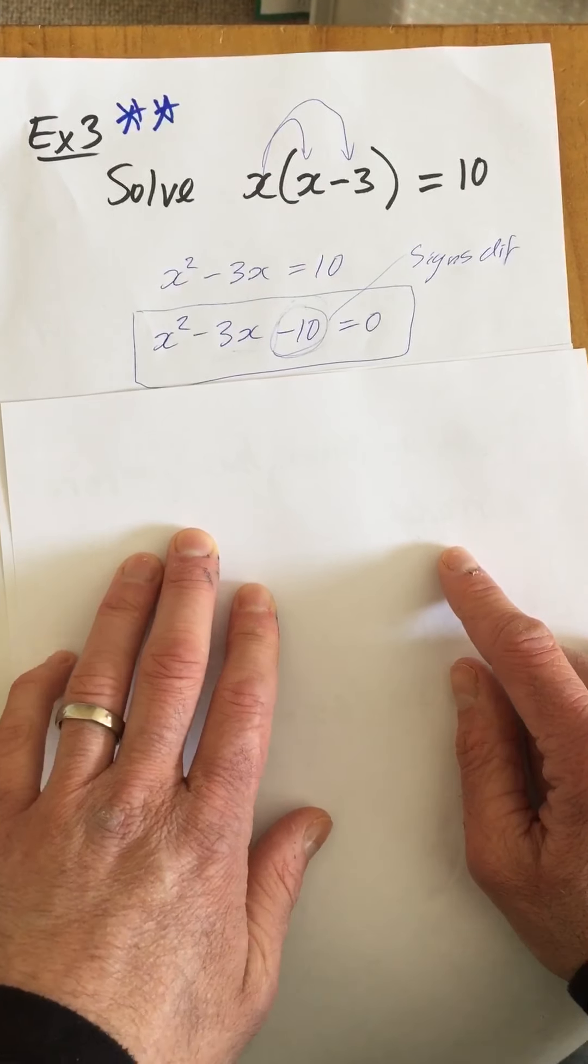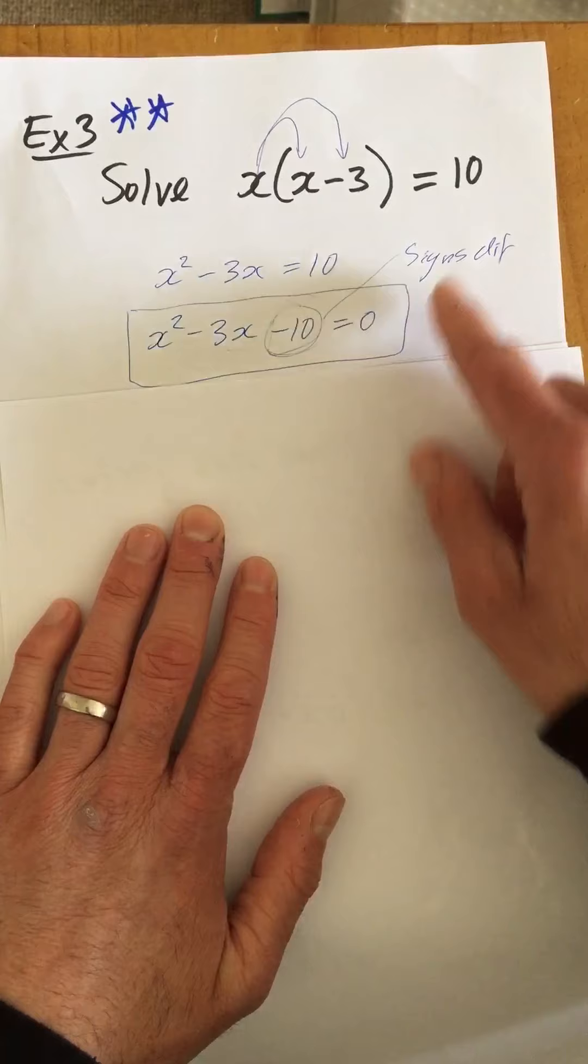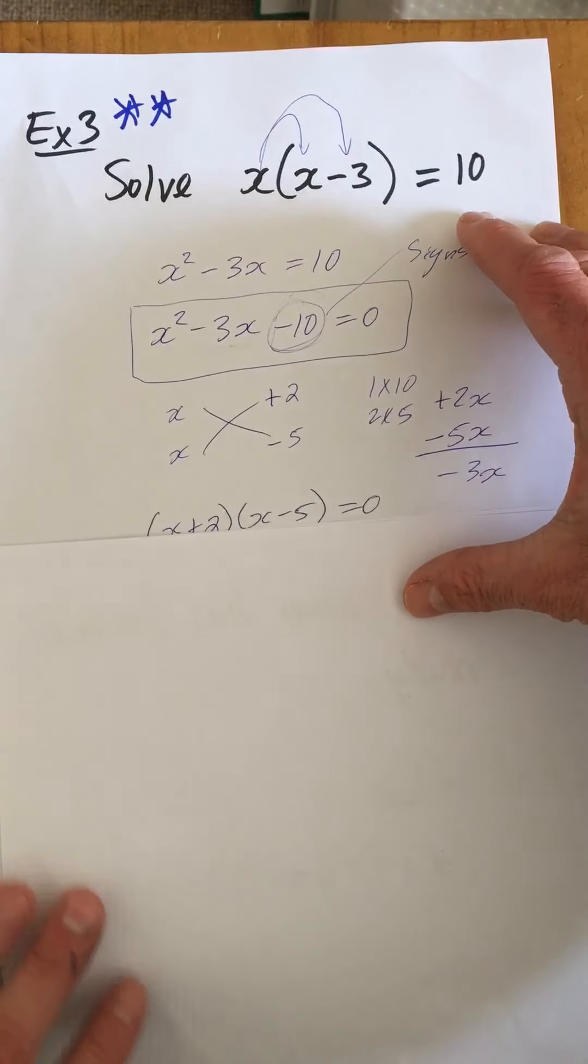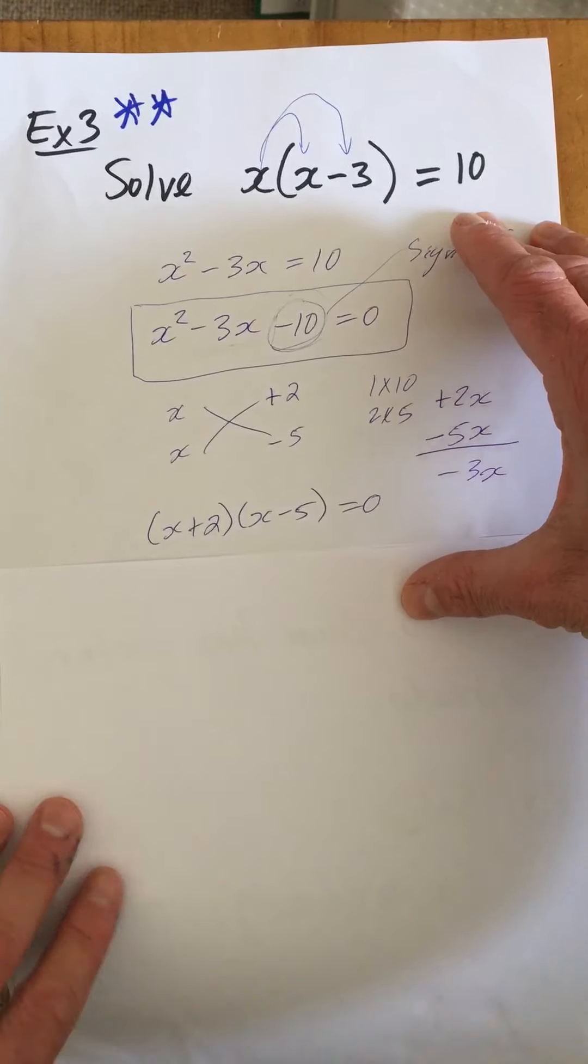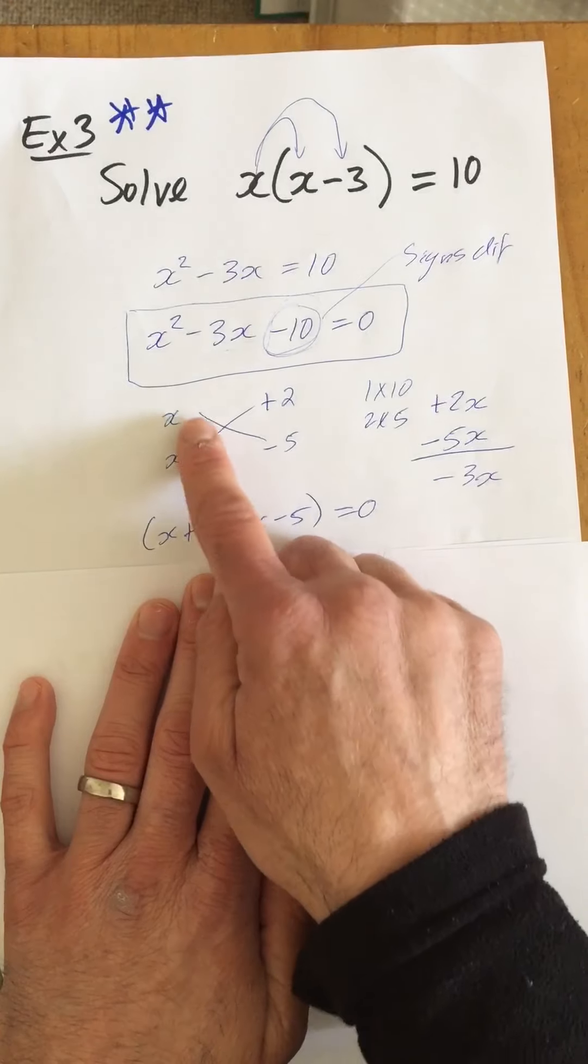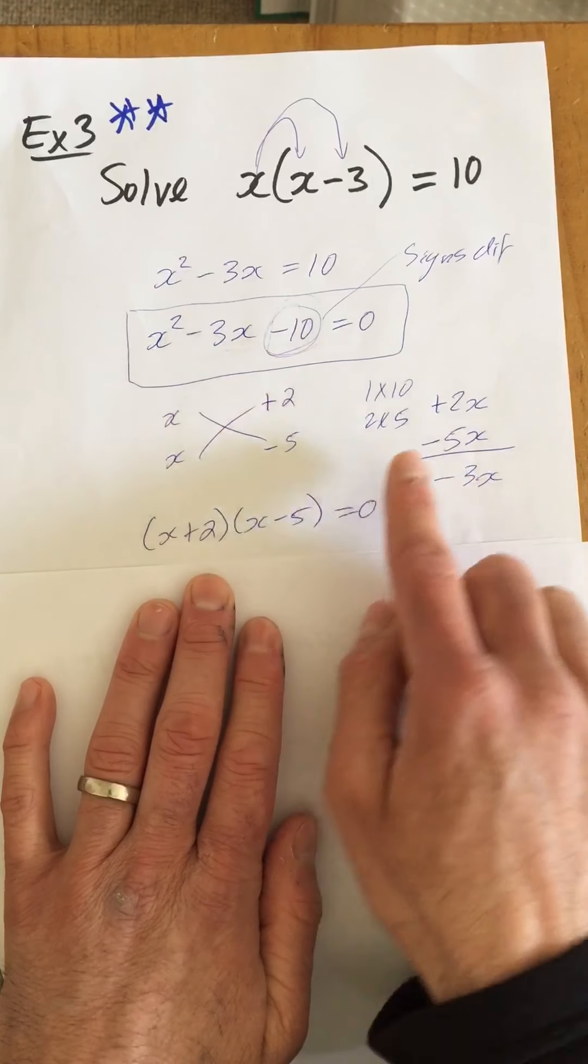You'll notice that this has become a trinomial. The signs are going to be different. So we do our rough work. And when we do our rough work, which we've learned already in factors, we use our X factor. The signs are different.